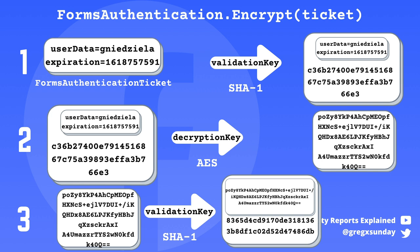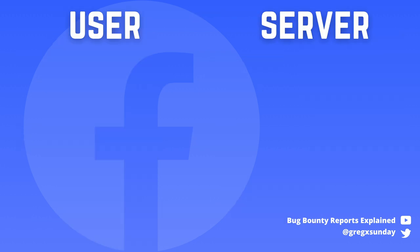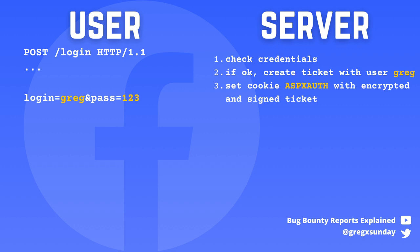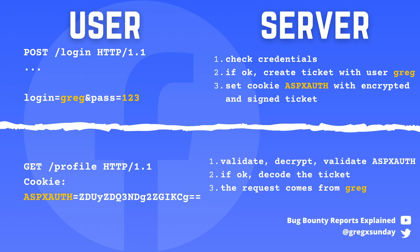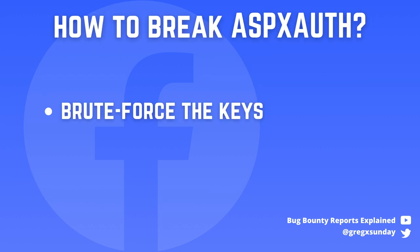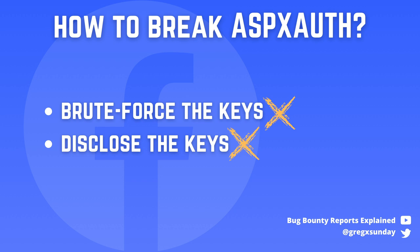SHA-1 is the default signing algorithm while AES is the standard encryption algorithm. The developer must set at least two keys: a validation key for signing and a decryption key for encryption and decryption of the data. When you successfully log into the application, some of your data is put in this cookie and sent with every request. Upon every request, the application validates the first signature, decrypts the cookie, and validates the second signature. It then decodes your username or user ID from the ticket and confirms it's actually you. If something goes wrong, you are not authenticated. Keys are sufficiently strong so the cookie is not brute-forcible, and there is no known way to disclose those keys.